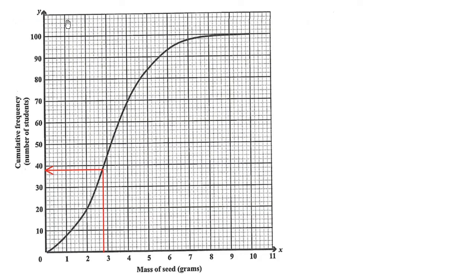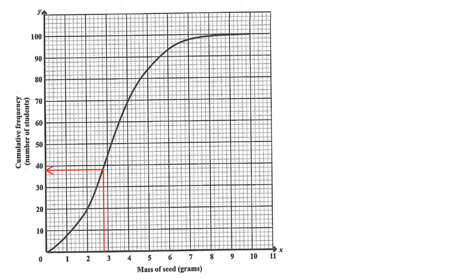Part 4: find the number of students whose estimate is 2.8 grams or less, for 1 mark. I'll go to the cumulative frequency curve and locate 2.8 grams on the x-axis, and use graphical interpolation to find the corresponding cumulative frequency. We go up to the cumulative frequency curve and across to the y-axis to find the corresponding y-value, which is 38 students. So the number of students whose estimate is 2.8 grams or less is 38 students.